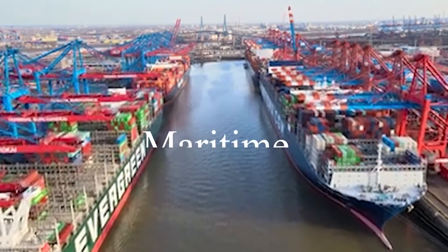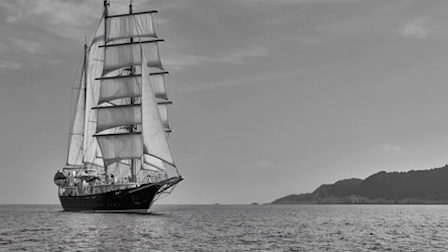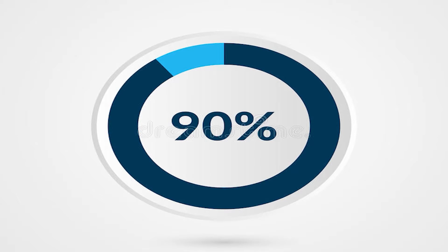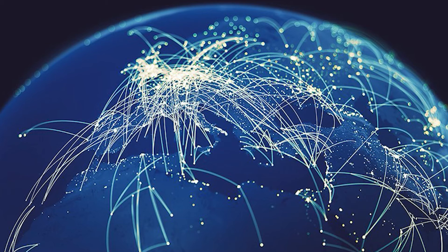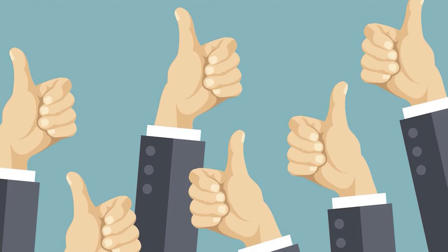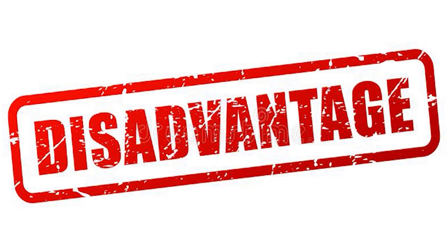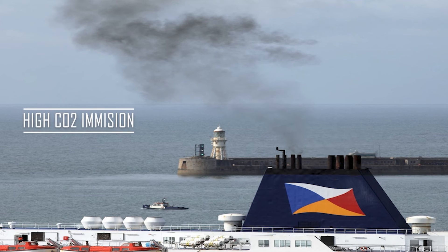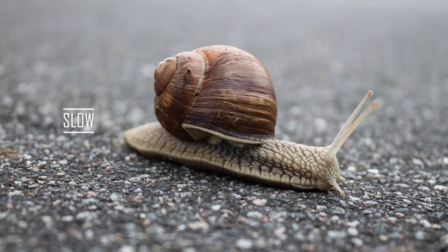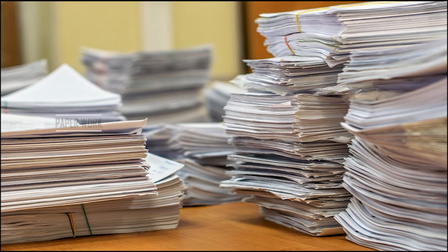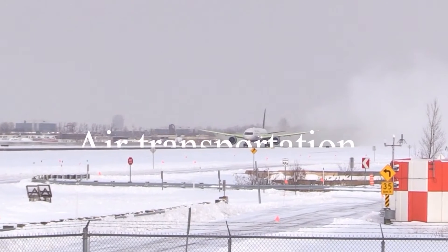Moving to the second mode of transport — maritime. It is the oldest mode, accounting for 90% of all global trade. One advantage is that a single ship can carry a big volume of shipment. However, there are many disadvantages: high carbon dioxide emissions, low speed, and a lot of paperwork and regulations involved.